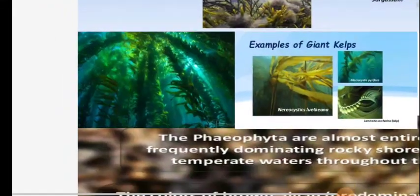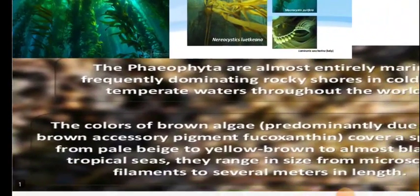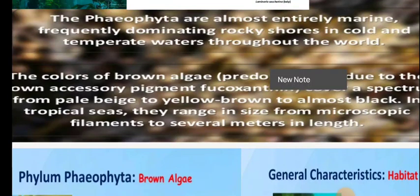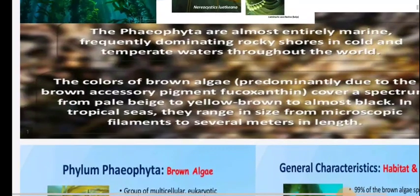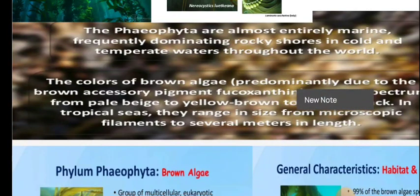Phaeophyta members are almost entirely marine, frequently dominating rocky shores in cold and temperate waters throughout the world. We are knowing our oceanic conditions — deep oceans, Pacific Ocean, Atlantic Ocean, Indian Ocean — the maximum part is generally ocean. There are open sea pelagic or seashore areas where they mainly show their large occurrence.